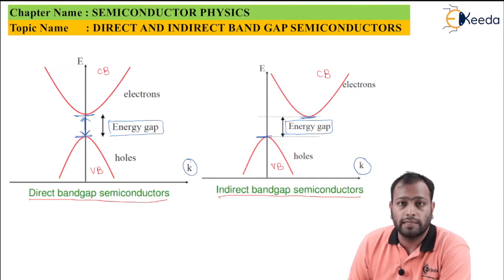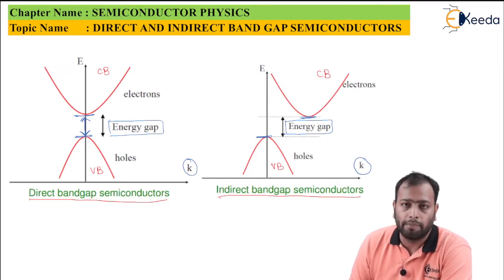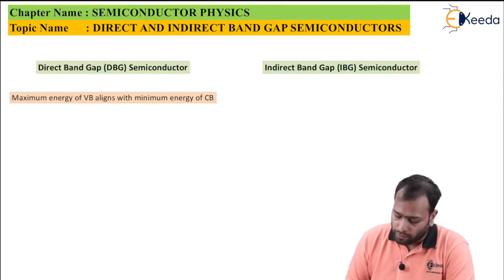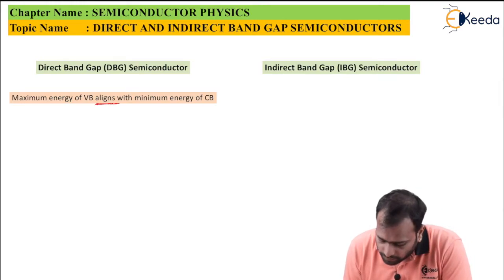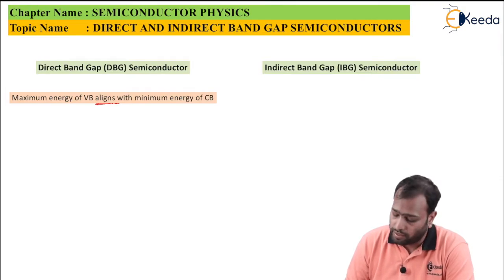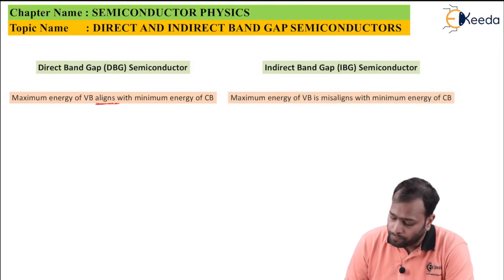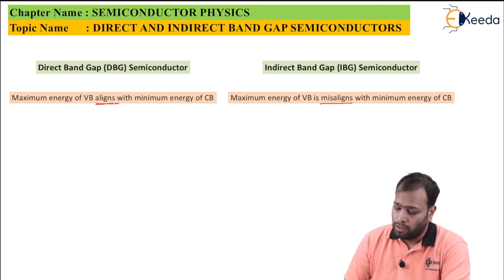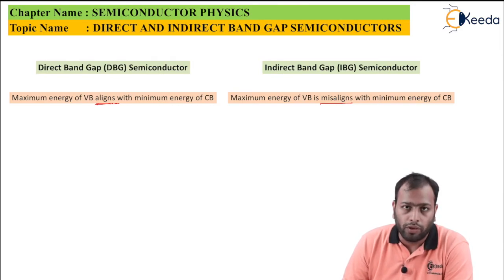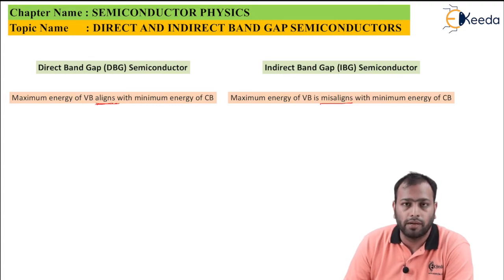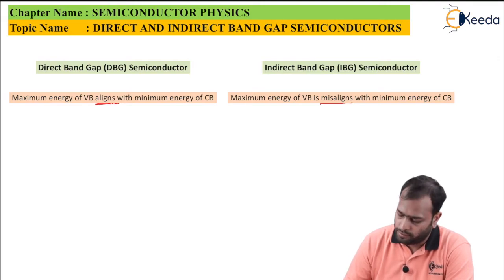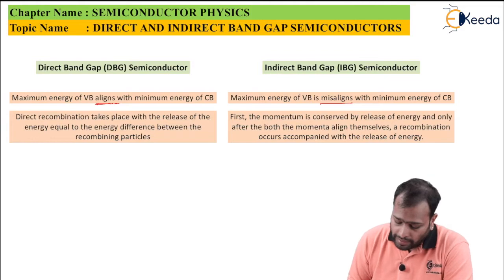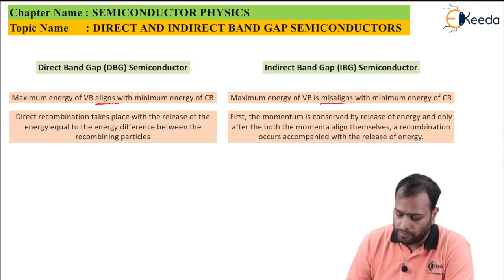An important question for university exams: distinguish between direct band gap semiconductors and indirect band semiconductors. The first point is that in a direct band semiconductor, the maximum energy of the valence band (Vb) aligns with the minimum energy of the conduction band (CB), whereas in an indirect band semiconductor the maximum energy of Vb misaligns with the minimum energy of CB. Always remember to draw the diagram for each as the very first point in your answer. The second point is that in a direct band semiconductor, recombination takes place with release of energy equal to the energy difference between the recombining particles.